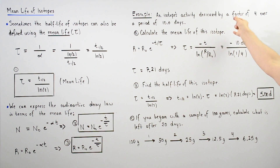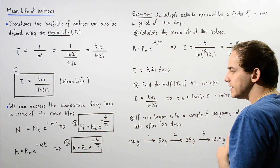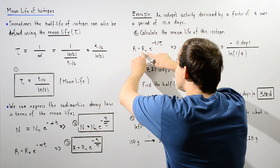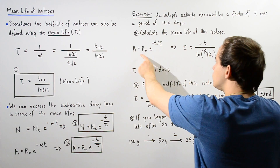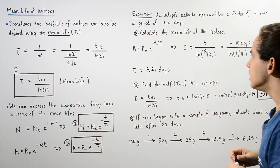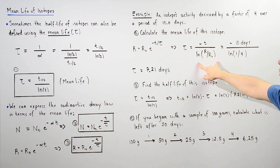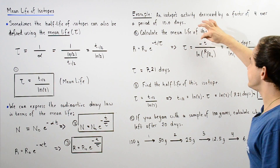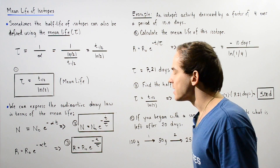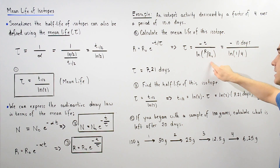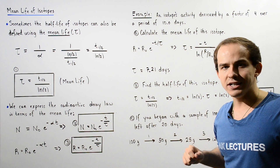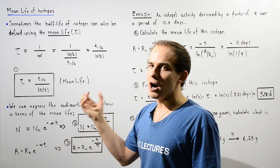For part A, since we know the ratio of our activities and the time interval, we use equation 3. Rearranging to solve for tau: bring R-not to the left side to get R divided by R-not equals e to the negative t over tau. Taking the natural log of both sides and rearranging gives tau equals negative t divided by the natural log of R over R-not. With R over R-not equal to 1/4 and t equal to 10 days, we get a mean life of 7.21 days.